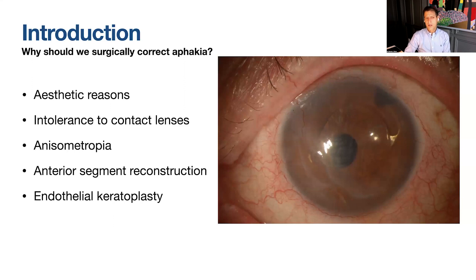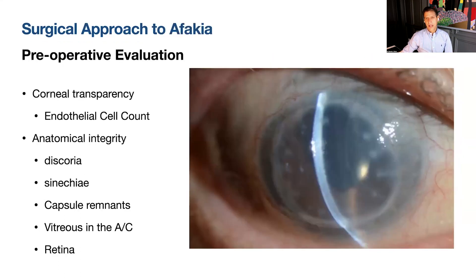Cases requiring anterior segment reconstruction are another indication. If we're thinking of doing an endothelial keratoplasty, we need to resolve anterior segment issues before doing it so the graft will stay in place. So what do we do with patients who need a secondary IOL? First we evaluate corneal transparency and make sure the endothelial cell count is adequate to sustain a secondary procedure.